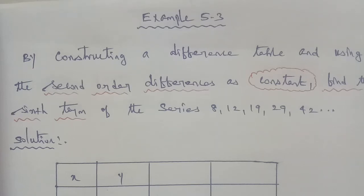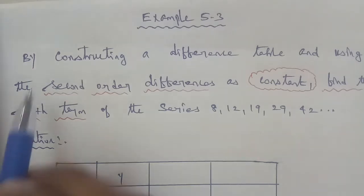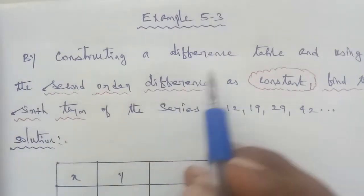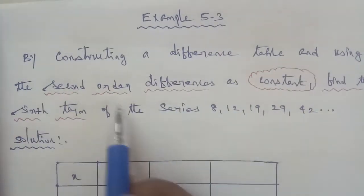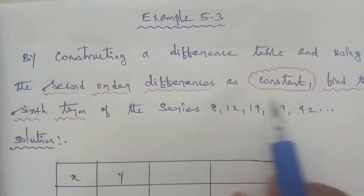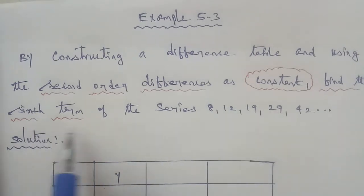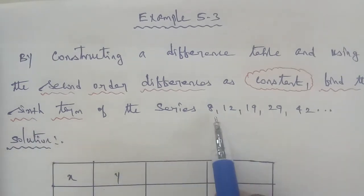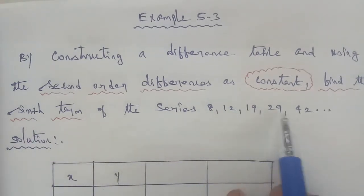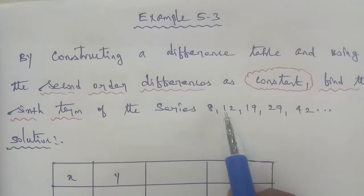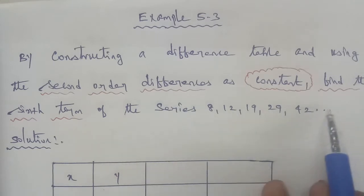Hi students. Today we will do Example 5.3 by constructing a difference table and using the second order difference as constant to find the sixth term of the series: 8, 12, 19, 29, 42.